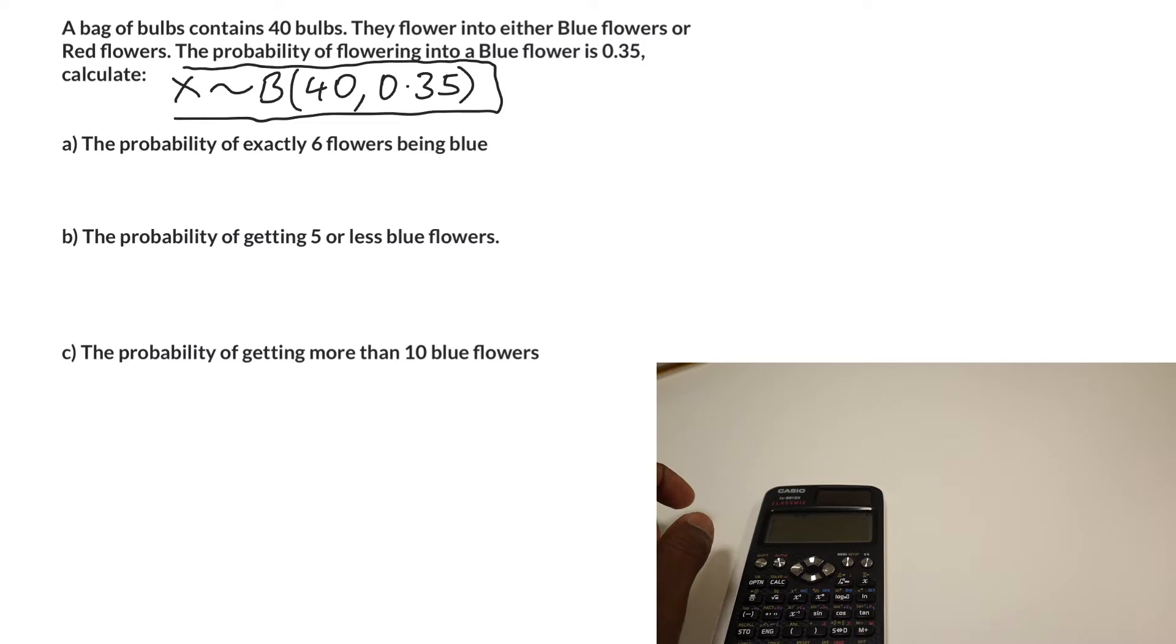Next, what do we need to find out? We need to find out the probability that we get exactly six flowers. What are we looking for? We're looking for the probability that x is equal to six.